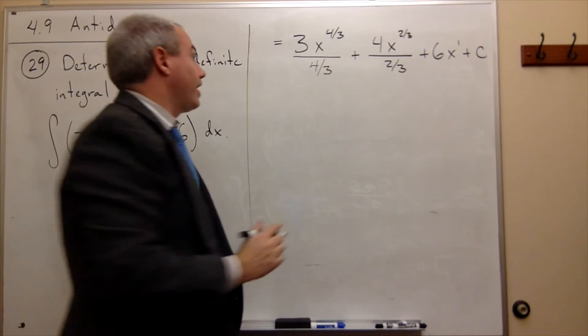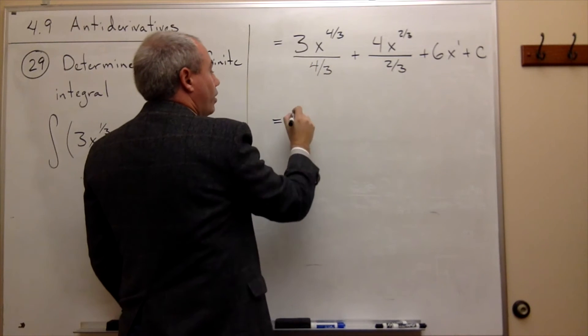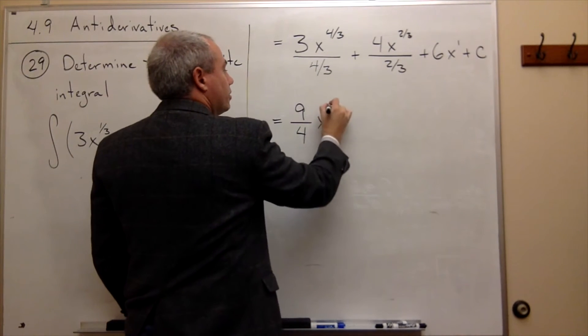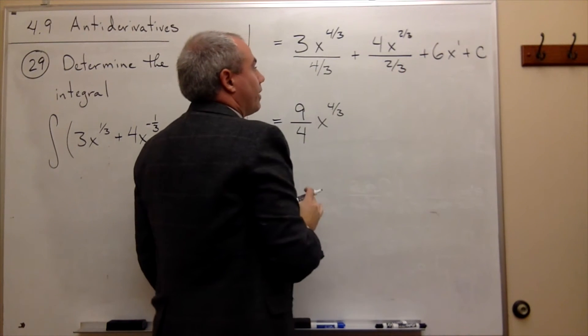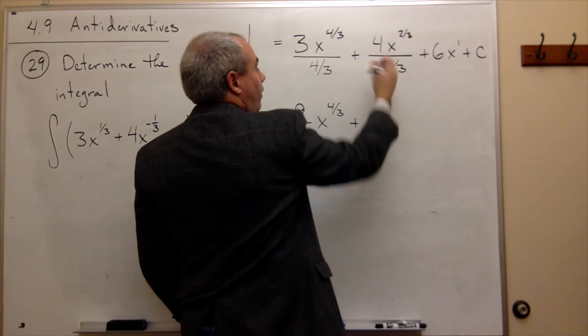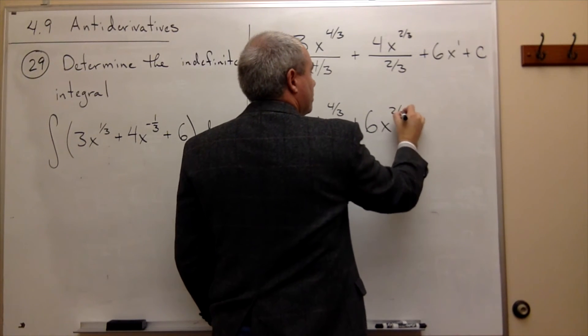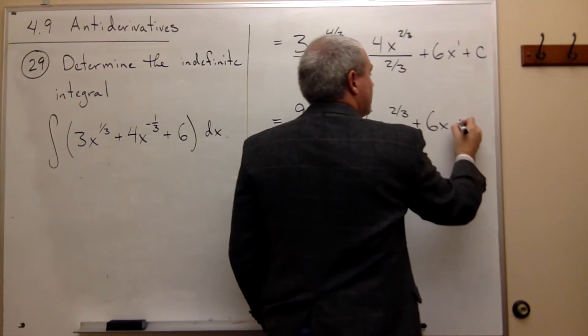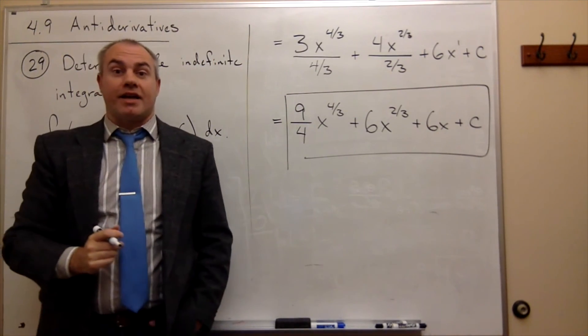Now let's simplify this a little bit. If I divide something by 4 thirds, it's the same as multiplying it by 3 fourths. So I get 9 fourths x to the 4 thirds. If I divide something by 2 thirds, it's the same as multiplying by 3 halves. So I get plus 12 halves. Now 12 halves is the same as 6x to the 2 thirds, plus 6x, plus c. And I get my antiderivative.